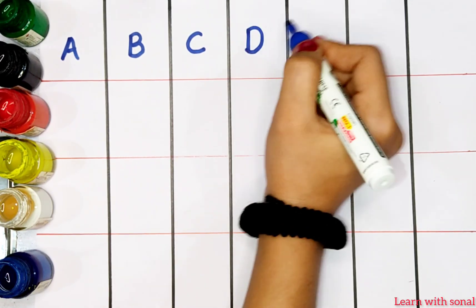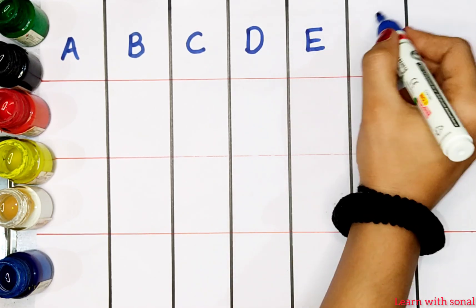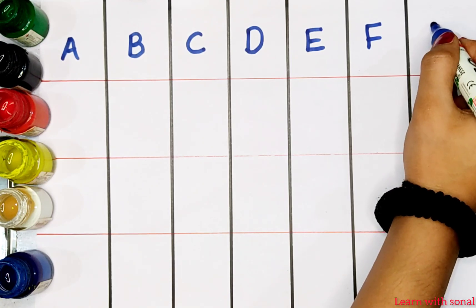D. D for dog. E. E for elephant. F. F for fish.